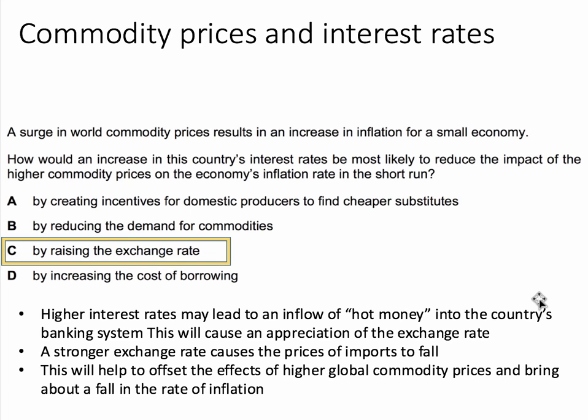An inflow of hot money will cause the exchange rate to appreciate — to go up in value — and an appreciating or stronger exchange rate causes prices of imported products to go down. So a stronger exchange rate will help to offset the effects of the higher global commodity prices and help to bring down inflation for this small economy. That's the reason why the answer is C.